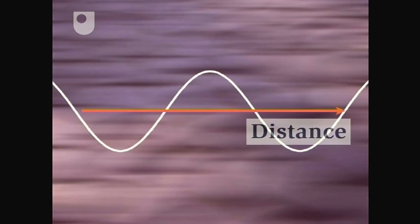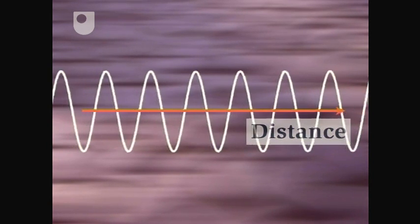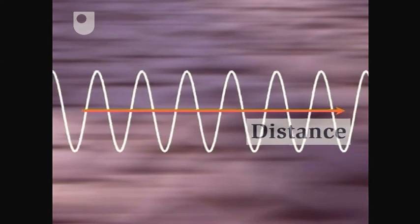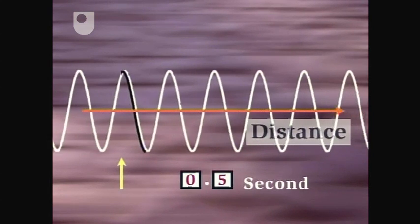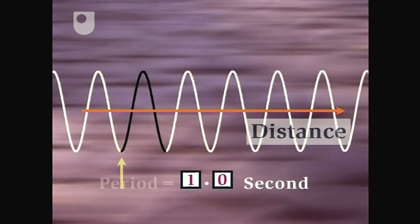On the other hand, if the paddle moves up and down more rapidly, the wavelength becomes shorter. In this case, the wave takes only one second to travel a distance of one wavelength. So with the paddle oscillating like this, one complete cycle goes past every second.